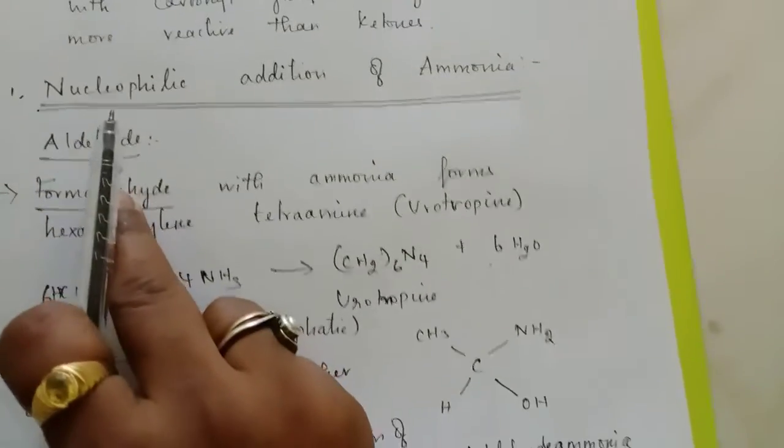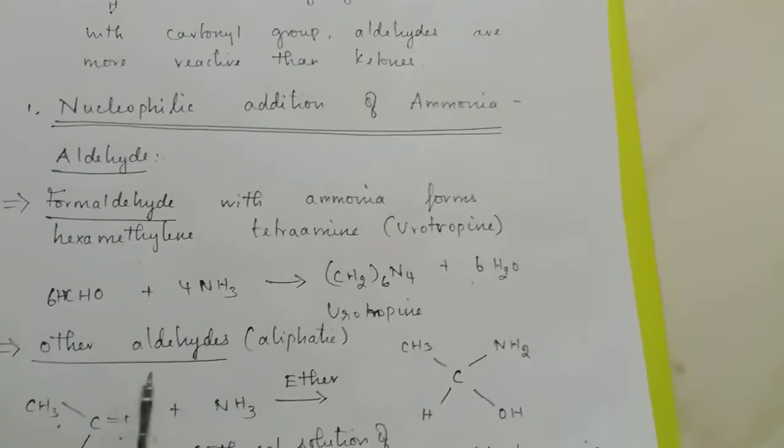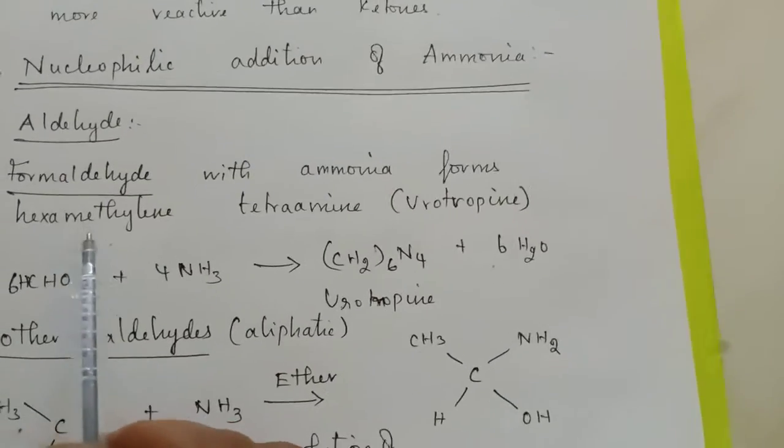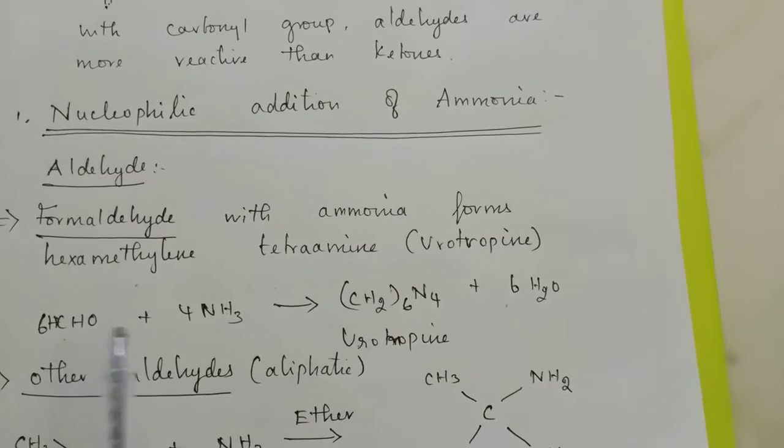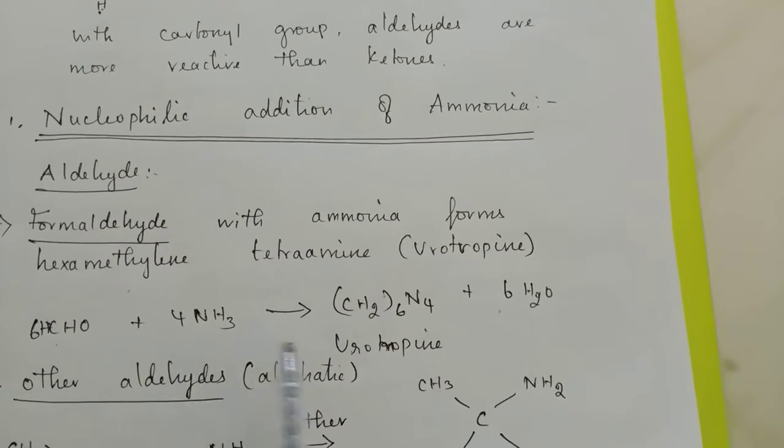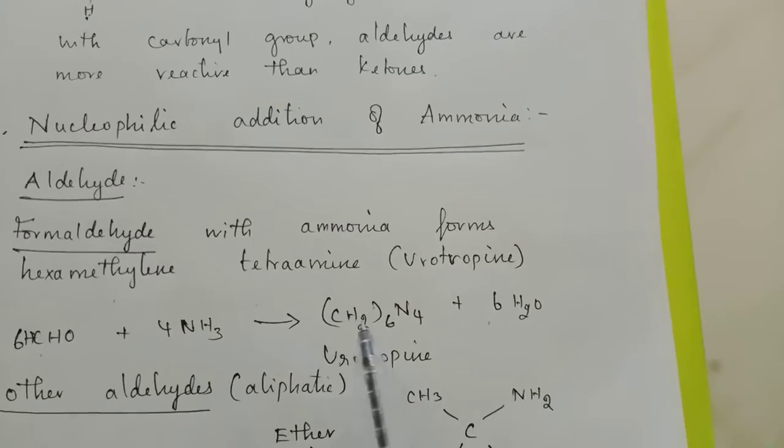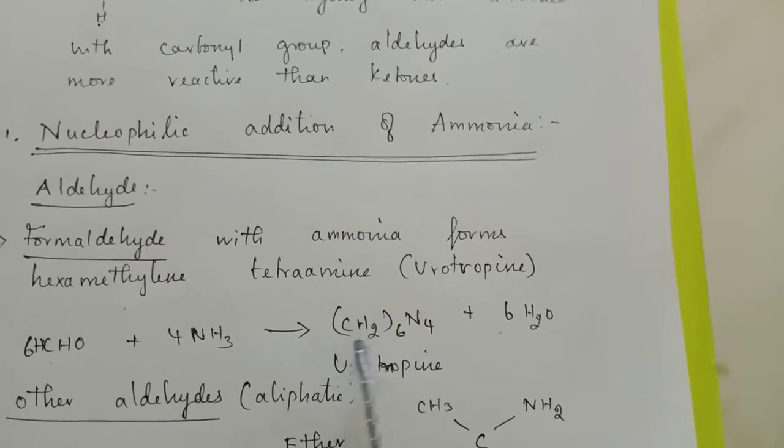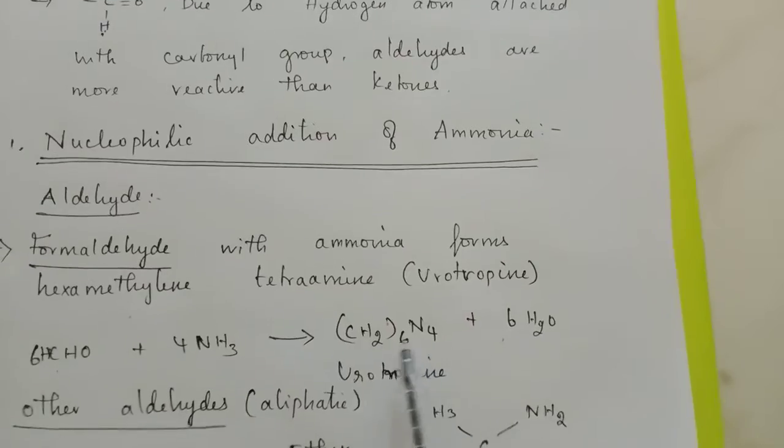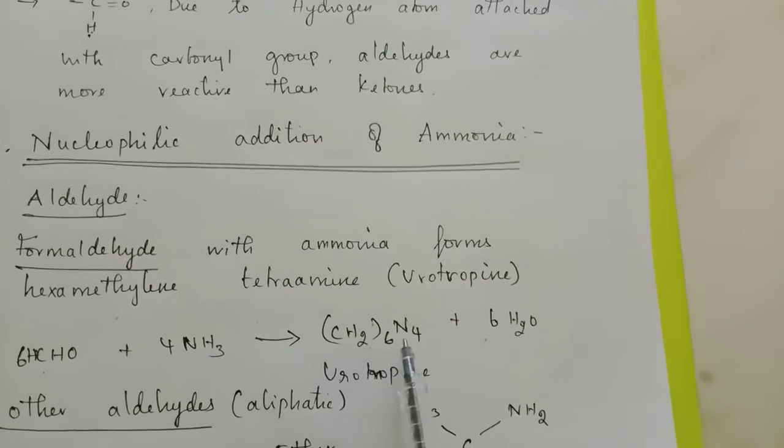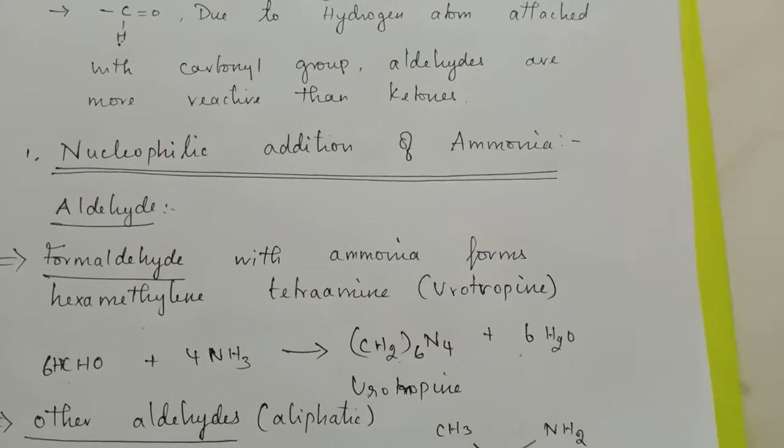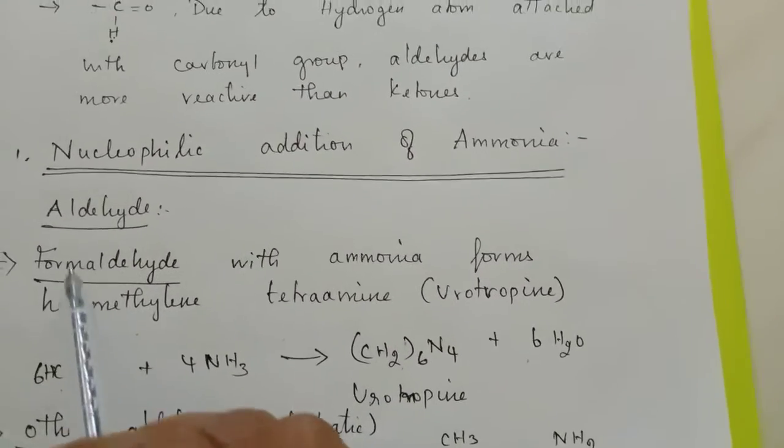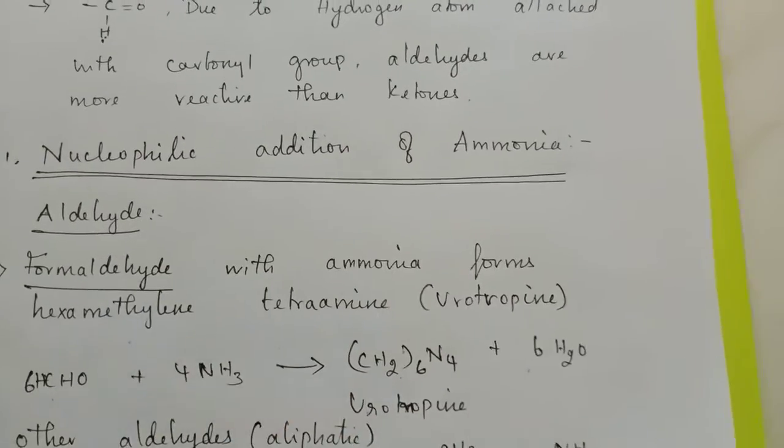When you move on to nucleophilic addition of ammonia, here it's about the aldehyde. When formaldehyde reacts with ammonia, you will get urotropin, which is hexamethylentetraamine, CH2-6-N4, otherwise known as urotropin. You will get this but only with formaldehyde.